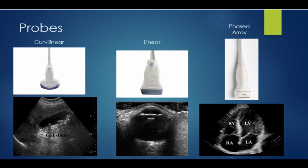The linear probe is used to image more superficial structures, often skin or soft tissue. The probe uses sound waves of a higher frequency, which generates a better quality image with great resolution, but sacrifices depth of penetration. Use this probe to look at retained foreign bodies, like large splinters or needles, or even the eye, as seen here. We can use it to look for papilledema or even retinal detachment.